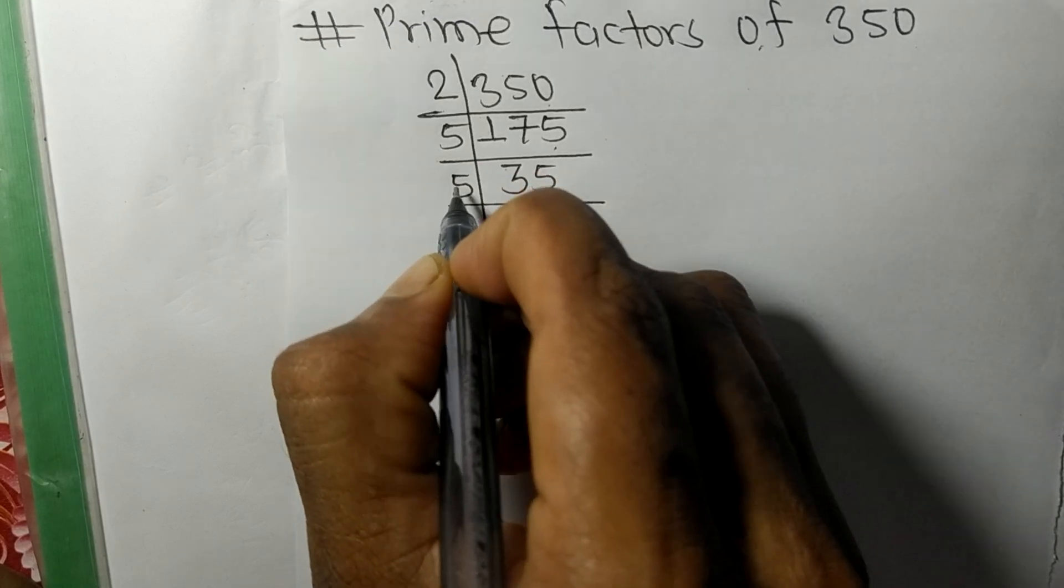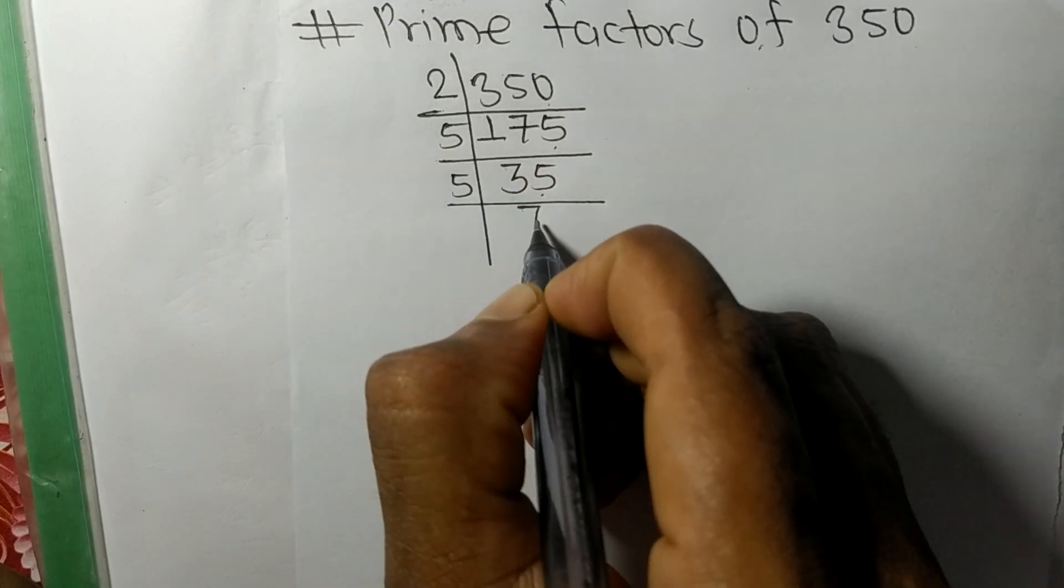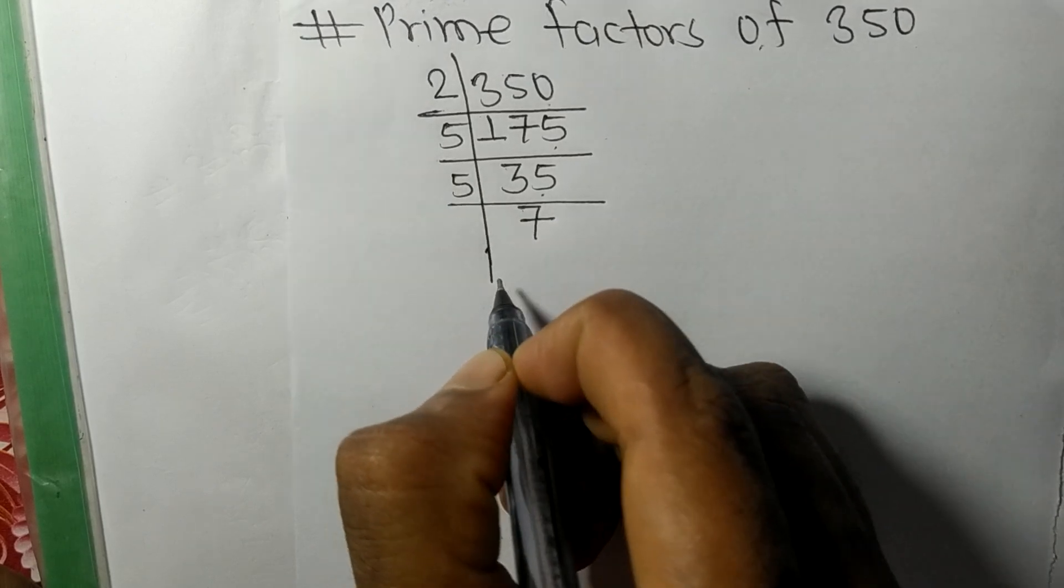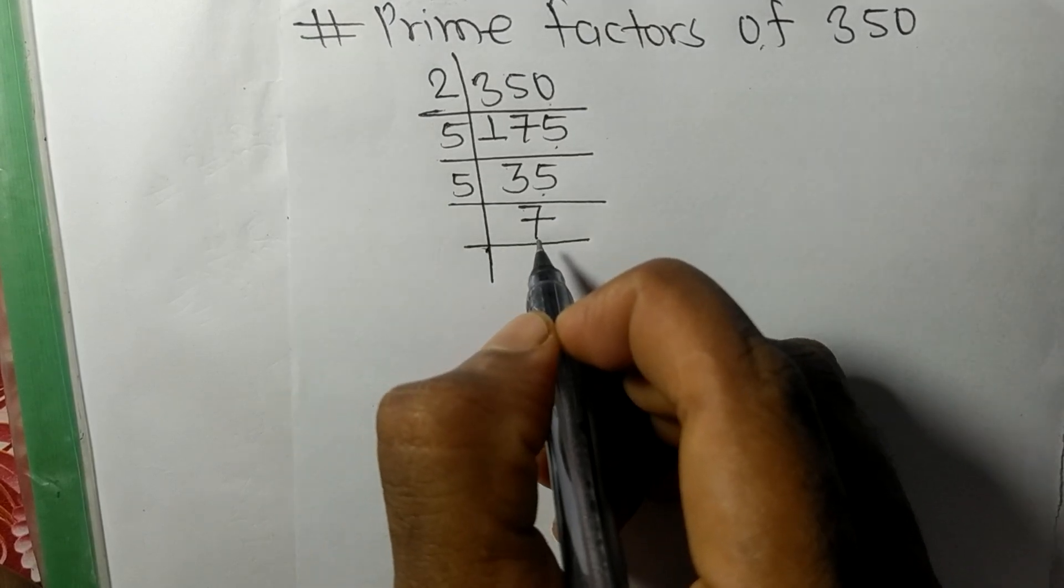5 times 7 is 35. So now we got 7, a prime number at the last.